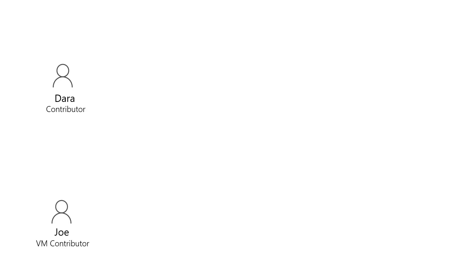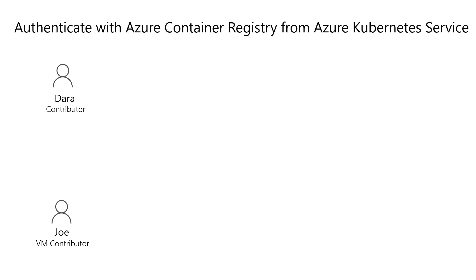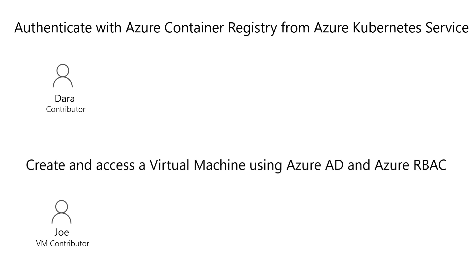So what's the problem we're trying to solve here? Let's look at Dada, who is a contributor in a subscription, and Anjo, who is a VM contributor in the subscription. Dada wants to authenticate with Azure Container Registry from Azure Kubernetes Services. Anjo wants to create and access virtual machines using Azure AD and Azure RBAC.